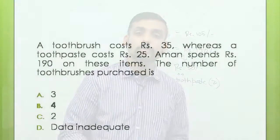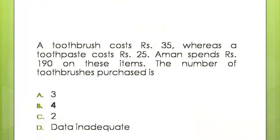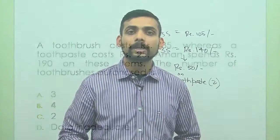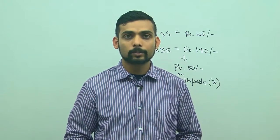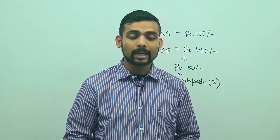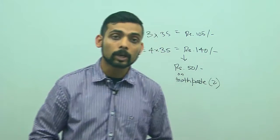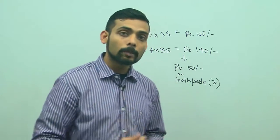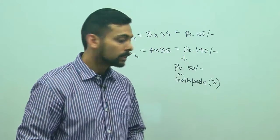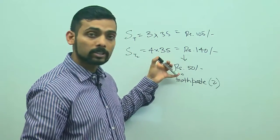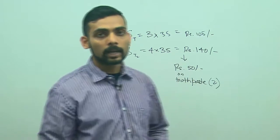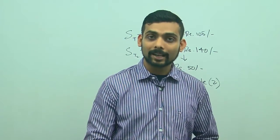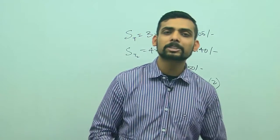Which is fine - I can buy 2 toothpastes for 50 rupees by spending 25 rupees each. So that will be my answer. Again, if I evaluate option C, 2 toothbrushes will cost 70 rupees and I can't spend the remaining 120 rupees buying toothpaste when one toothpaste costs 25 rupees. So the only combination is that he bought 4 toothbrushes and 2 tubes of toothpaste, totaling 140 plus 50, 190 rupees.